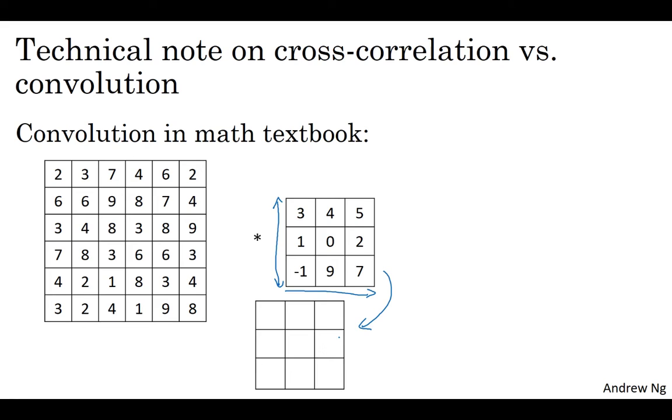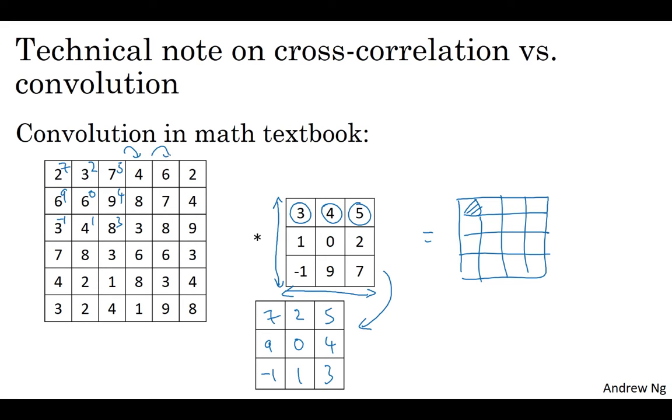So this 3, 4, 5, 1, 0, 2, minus 1, 9, 7 would become 3 goes here, 4 goes there, 5 goes there, and then the second row becomes this, 1, 0, 2, minus 1, 9, 7. But this is really taking the three by three filter and mirroring it both on the vertical and the horizontal axis. And then it was this flipped matrix that you would then copy over here. So to compute the output, you would take 2 times 7 plus 3 times 2 plus 7 times 5 and so on. And you actually multiply out the elements of this flipped matrix in order to compute the upper left-hand most elements of the 4 by 4 output as follows. And then you take those nine numbers and shift them over by one and so on.